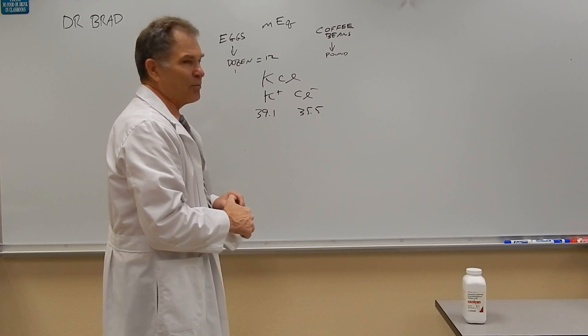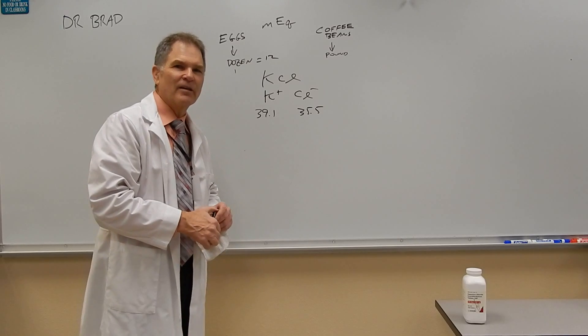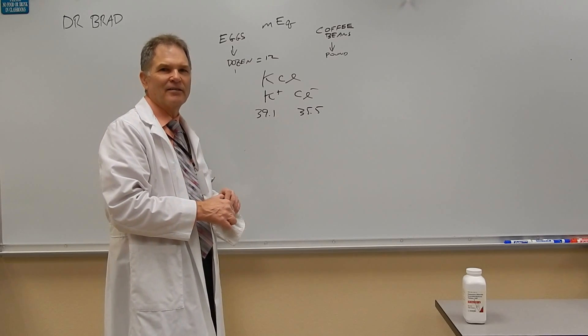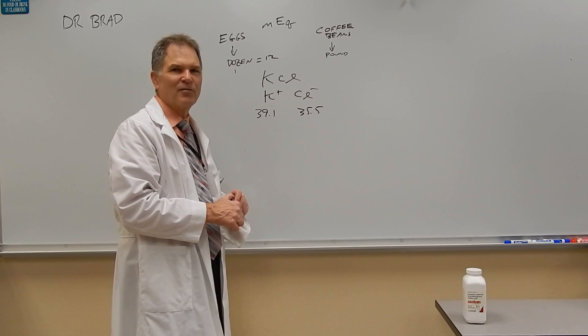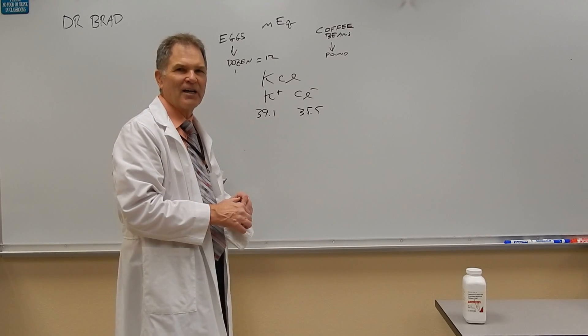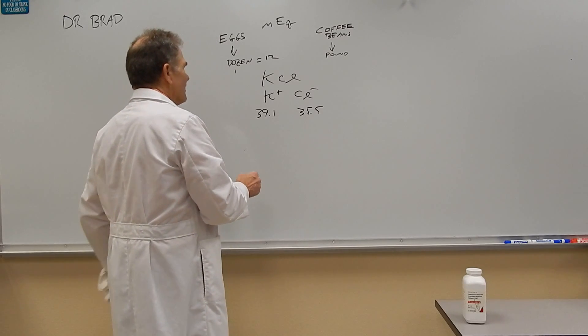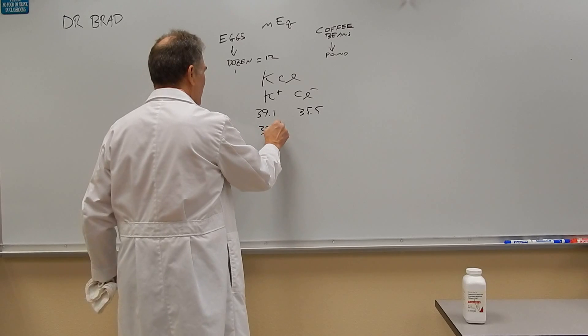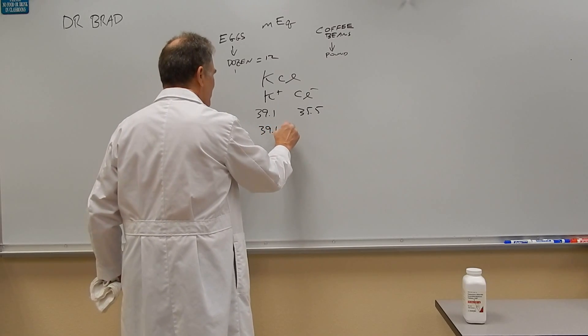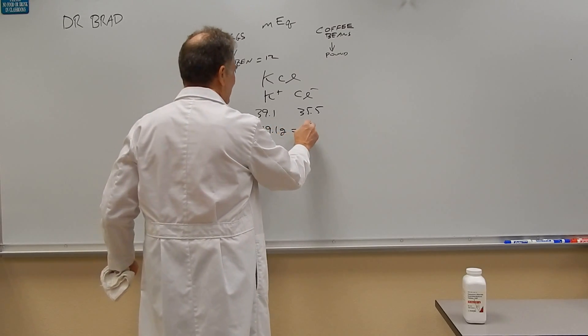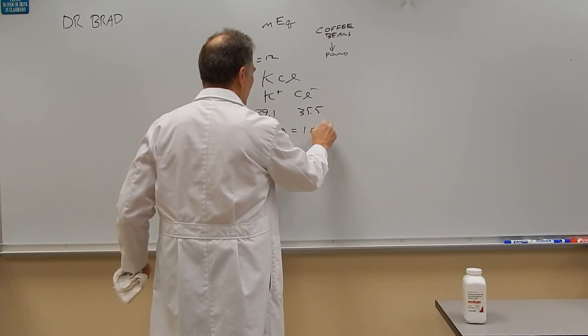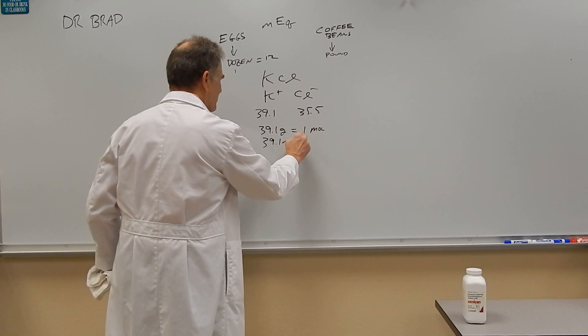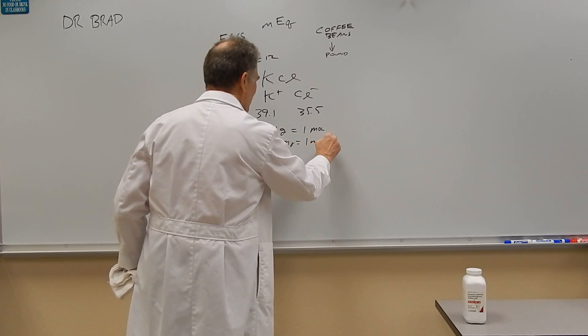So let's do a problem. They asked you how many milliequivalents are in 746 milligrams of potassium chloride. So going back to the atomic mass, what this means is if you have 39.1 grams of potassium, that equals one mole. Also means 39.1 milligrams equals one millimole.